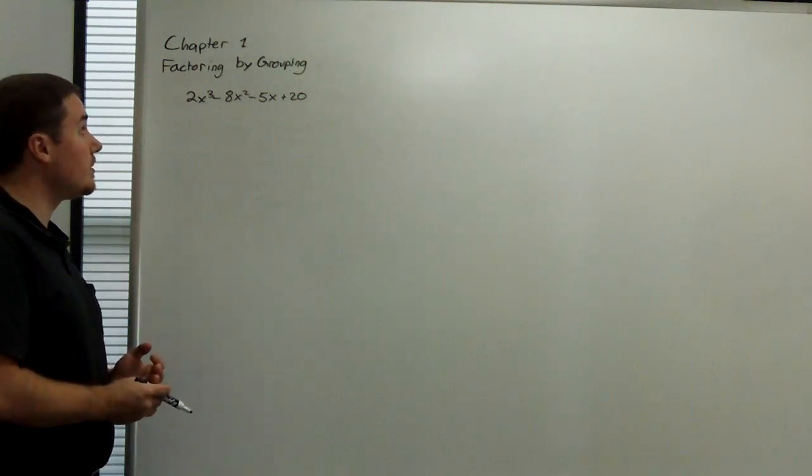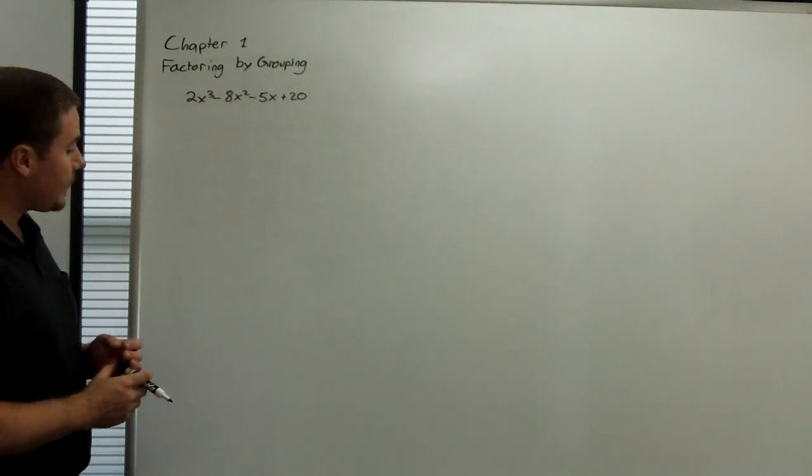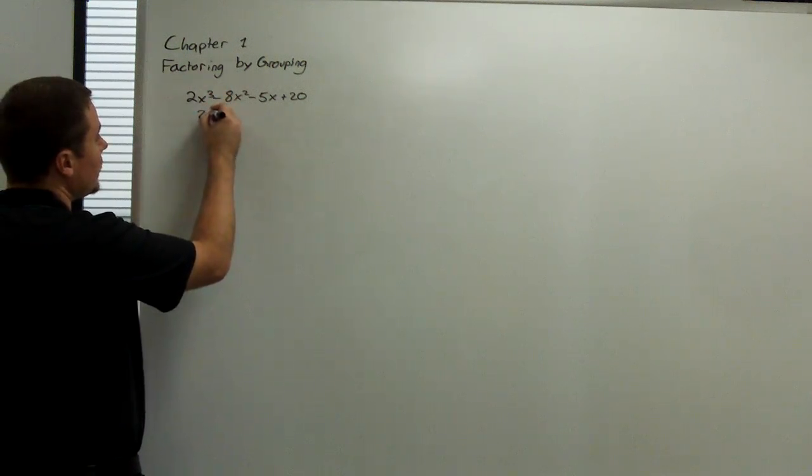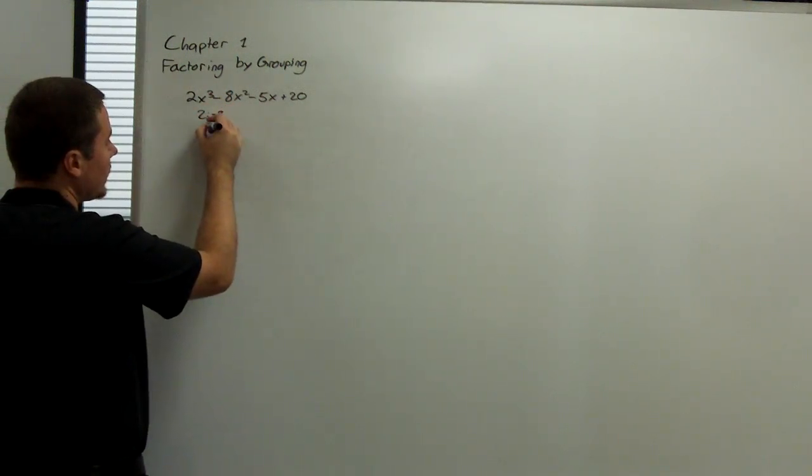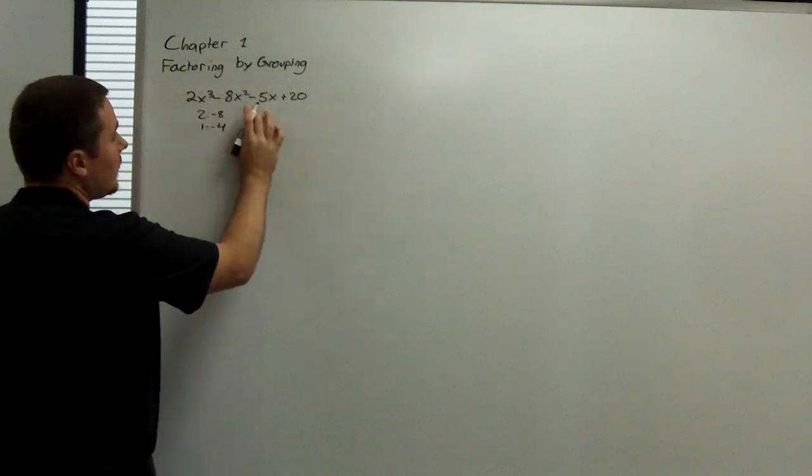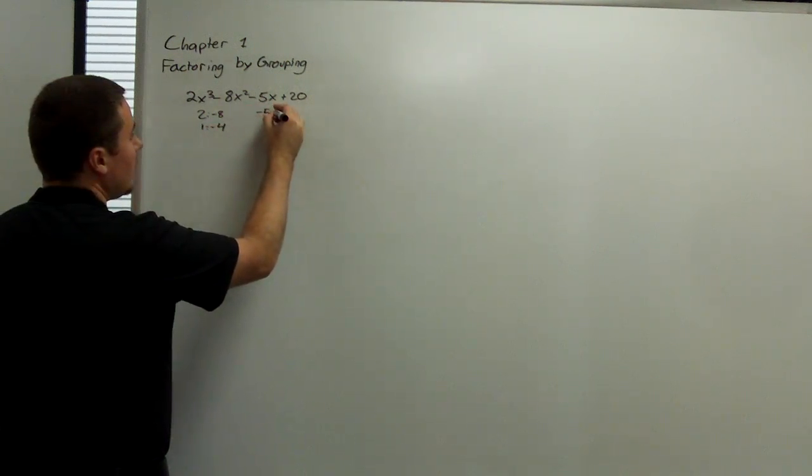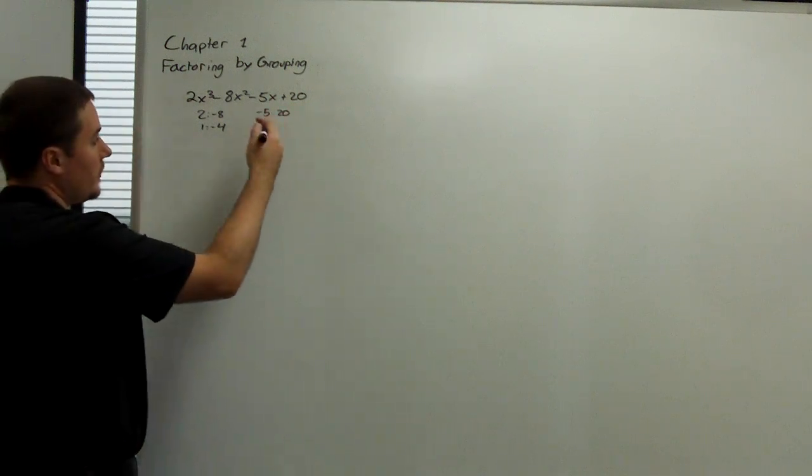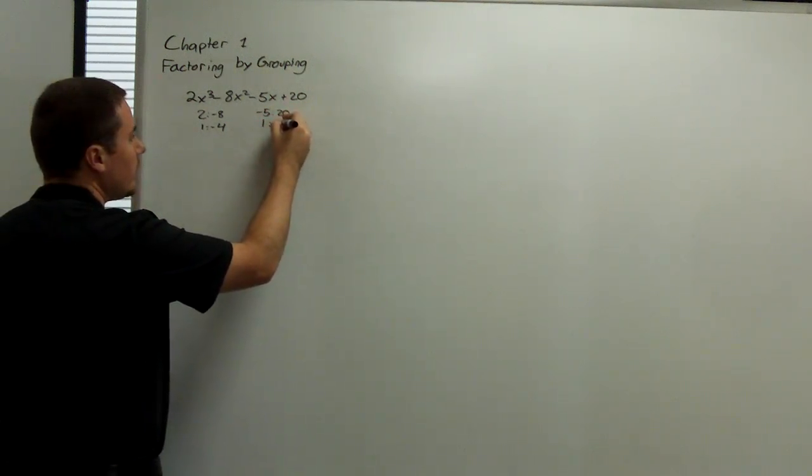Well, how do we know that we can proceed with factoring by grouping? We have to check for common ratios. Here the ratio is 2 to negative 8, which is actually 1 to negative 4. This is negative 5 to 20, which is, when we reduce it, 1 to negative 4.